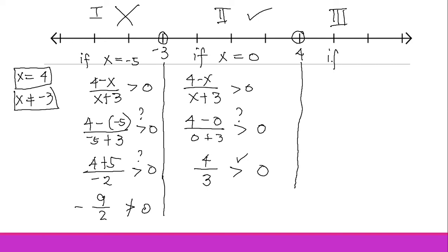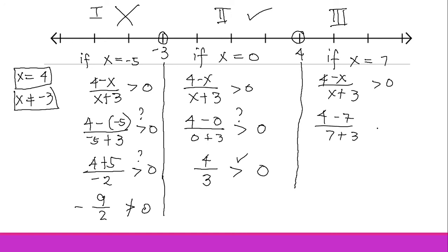For Region 3, which contains values greater than 4, let's choose x equals 7. Plugging into (4 minus x) over (x plus 3) greater than zero: we get (4 minus 7) over (7 plus 3), which is negative 3 over 10 — a negative result. This is not greater than zero, so Region 3 is false and is out of our possible solution.